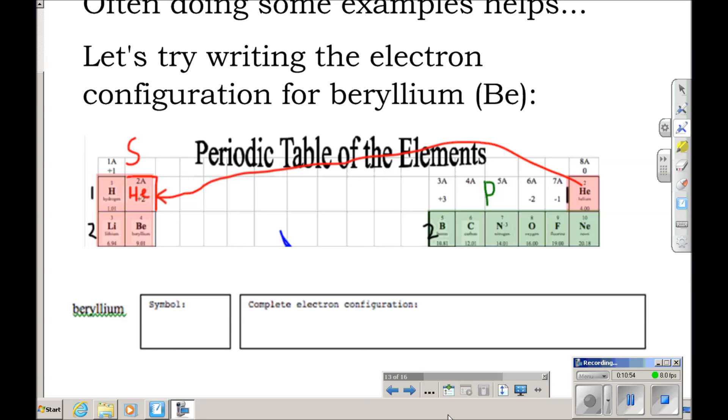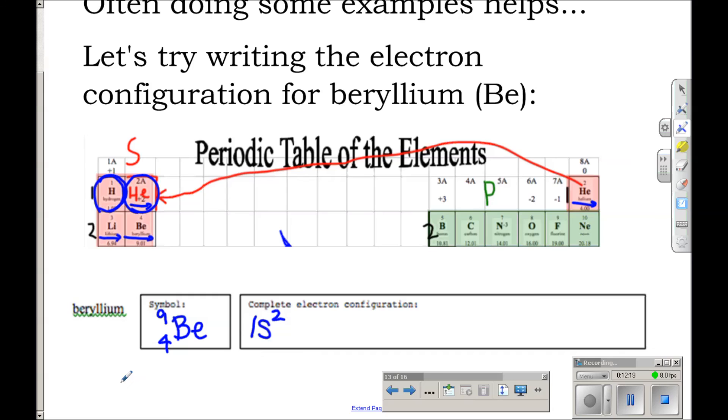And we'll stop there because that's the element that we're writing the configuration for. So what we're going to do is we're just going to make some notations. We're going to say, okay, if we start with hydrogen, we're starting off in the first period, and we are starting off in the S block. And we're going to notice that we have two elements, hydrogen and also helium, that are in that first period and in the S block. And so we're going to put a little 2 up here.